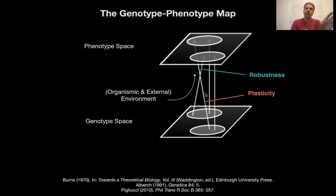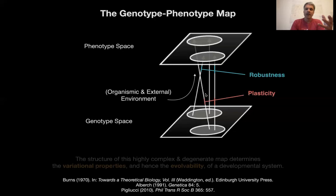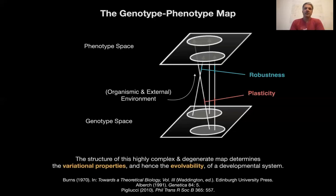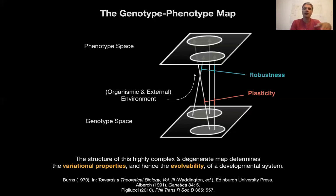There's a whole lot that goes into this very simple picture, but it's nevertheless good to structure your thought. The main task is to understand how genetic variation maps onto phenotypic variation. The structure of this highly complex and degenerate map determines the variational properties, and hence the evolvability of the developmental system. This is my own personal interest, but I would like to make an argument not only that modeling is important to understand development, but also the comparative analysis of developmental processes.